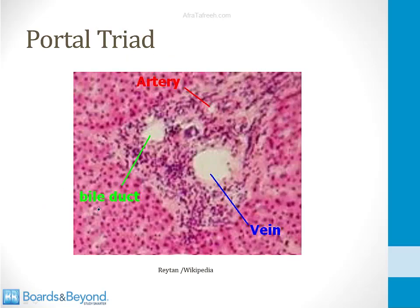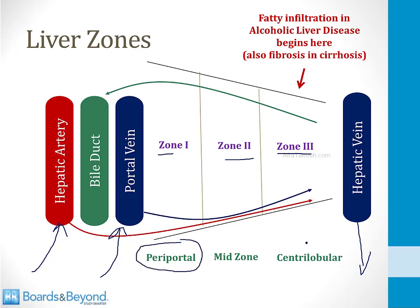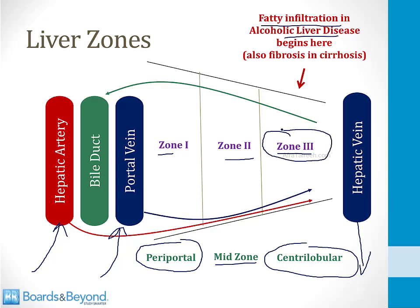The portal triad receives blood from both the portal vein and a hepatic artery. Blood then percolates through the hepatocytes to the central vein. Zone one is called the periportal zone, zone three is called the central lobular zone, and zone two is called the mid-zone. The key point for alcoholic liver disease is that fatty infiltration begins in zone three — zone three is affected first. This is also the first zone to be affected by fibrosis and alcoholic cirrhosis. Most liver pathologies affect zone three first. The only important exception is that viral hepatitis tends to infect zone one first.